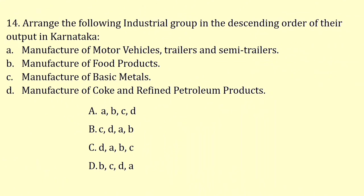Arrange the following industrial groups in descending order of their output in Karnataka. The highest output was Manufacture of Food Products, then Basic Metals, then Coke and Petroleum Products, and last, Motor Vehicles, Trailers and Semi-Trailers. So the answer is option D.